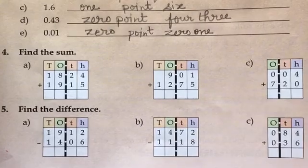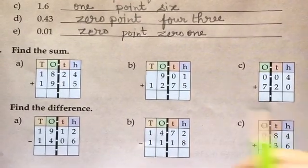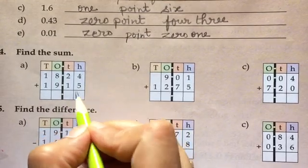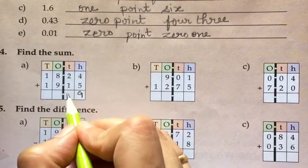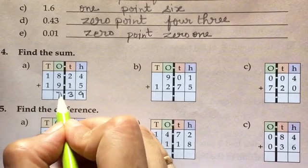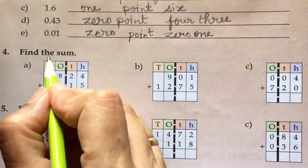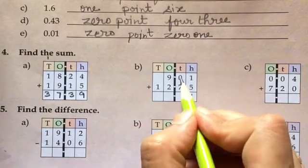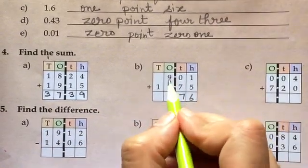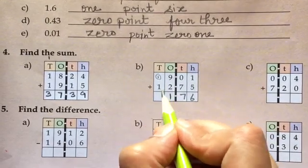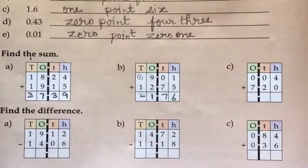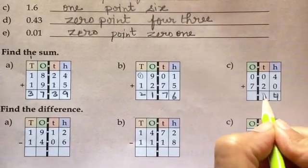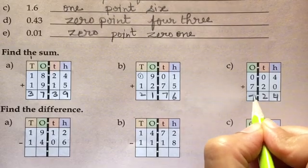Next find the sum and the difference. Sum add them, you arrange them column wise. 5 plus 4 is 9, 2 plus 1 is 3, 8 plus 9 is 17 and 1 will go here. So it will be 3. Here also, 5 plus 1 is 6, 0 plus 7 is 7, 9 plus 2 is 11 and 1 will go here. So 2 and the another one, 4 plus 0 is 4, it will be 2 and it will be 7.